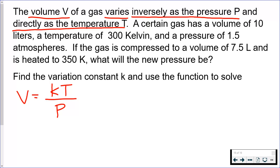So now we have our function. The next part, a certain gas has a volume of 10 liters, a temperature of 300 Kelvin, and a pressure of 1.5 atmospheres. So all of those have to go together. Do not combine it with any numbers after it, because it's saying in that sentence that that gas has all of those characteristics. So that's what I'm going to plug in into each space where they go in the function.